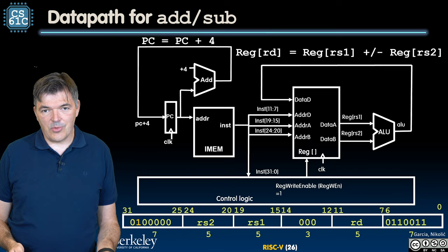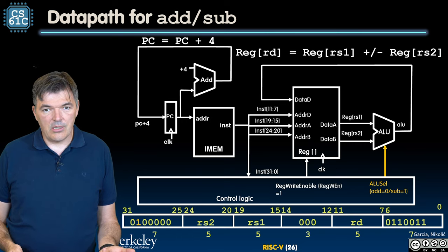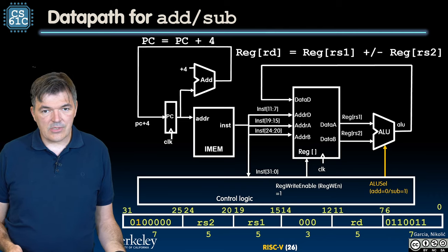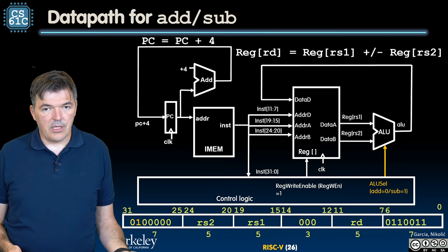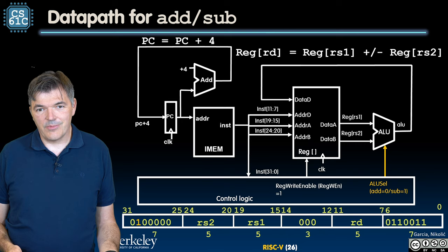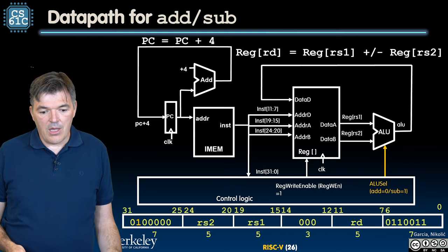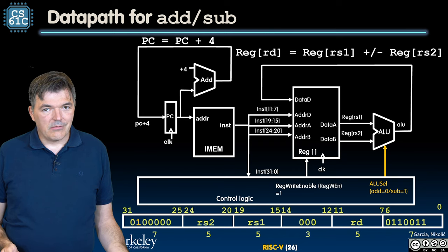So we just need to be able to do these two different instructions. We need to provide another control bit, and that control bit in this case is ALU select. That ALU select, if it is zero, the ALU will perform addition. If it is set to one, it will perform subtraction. Done.